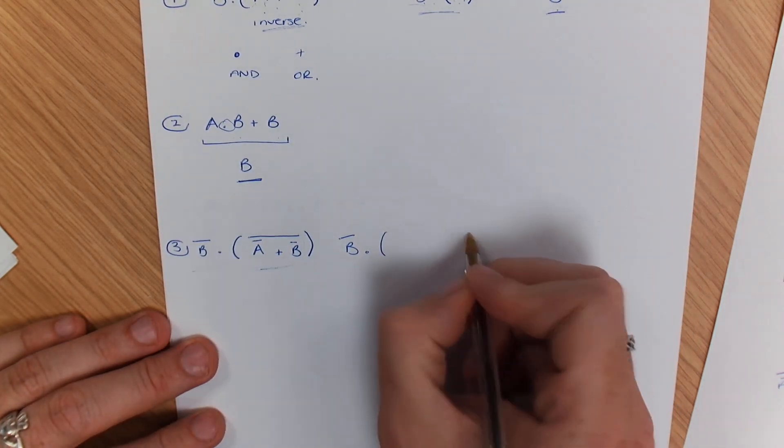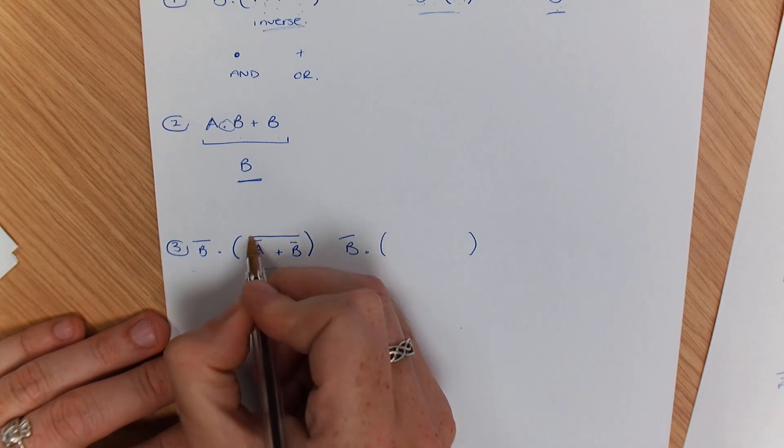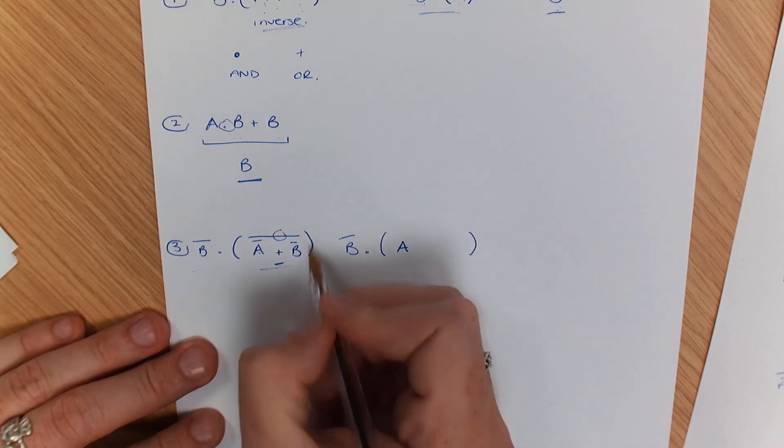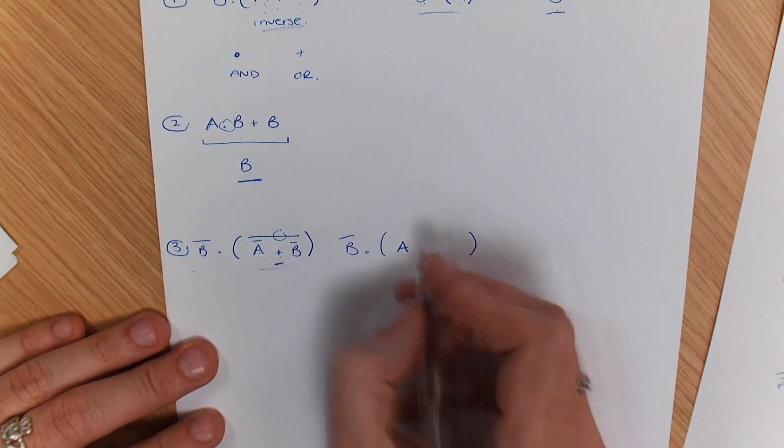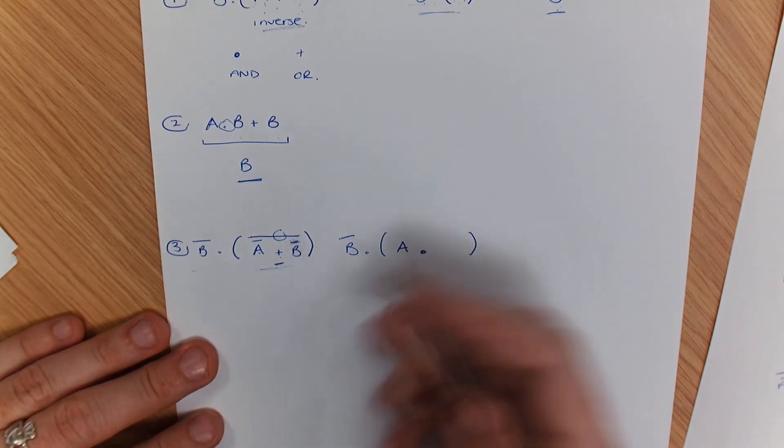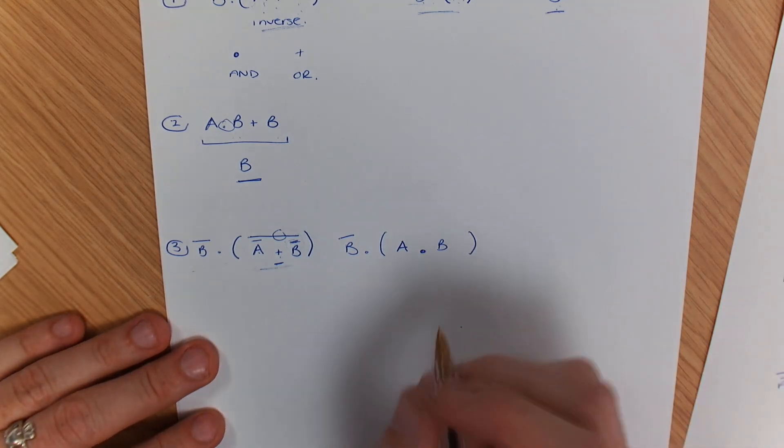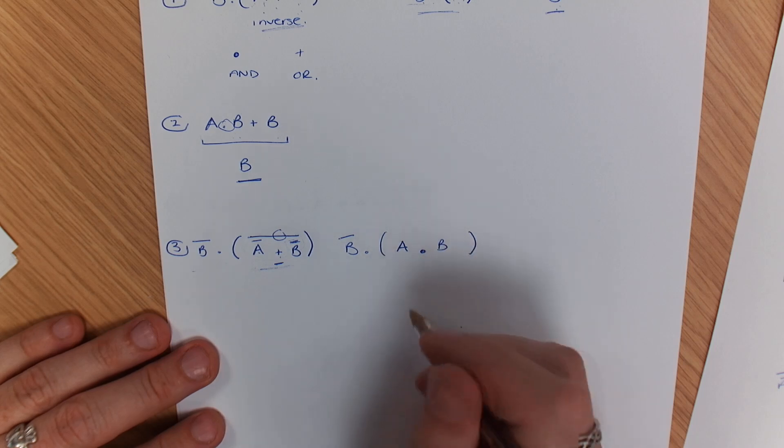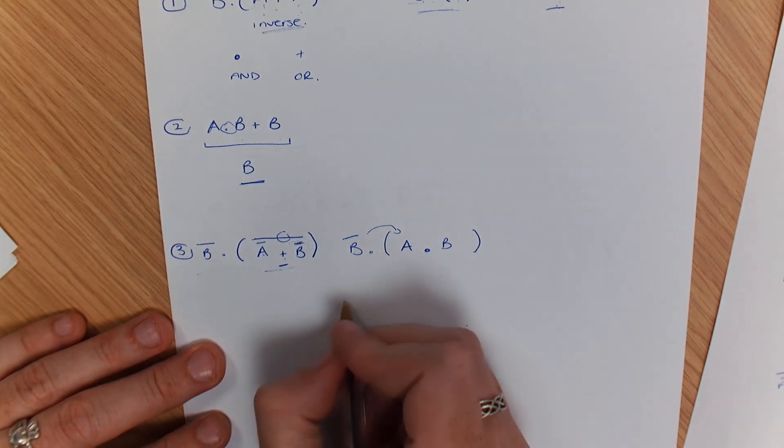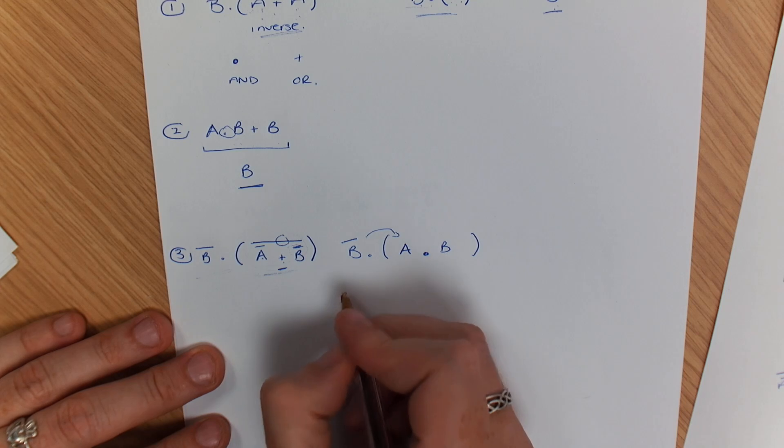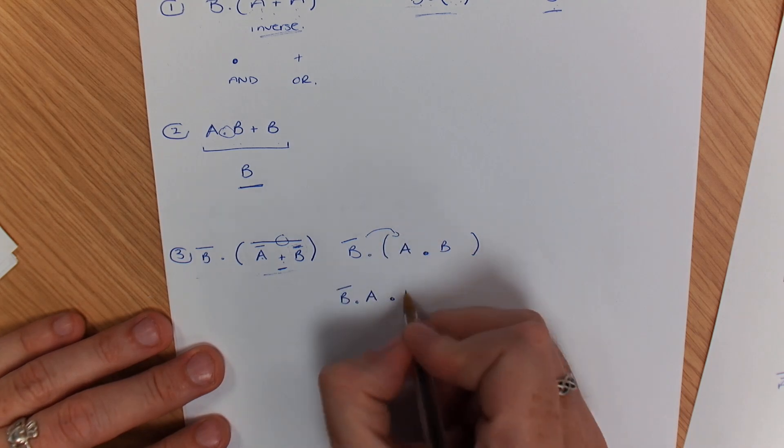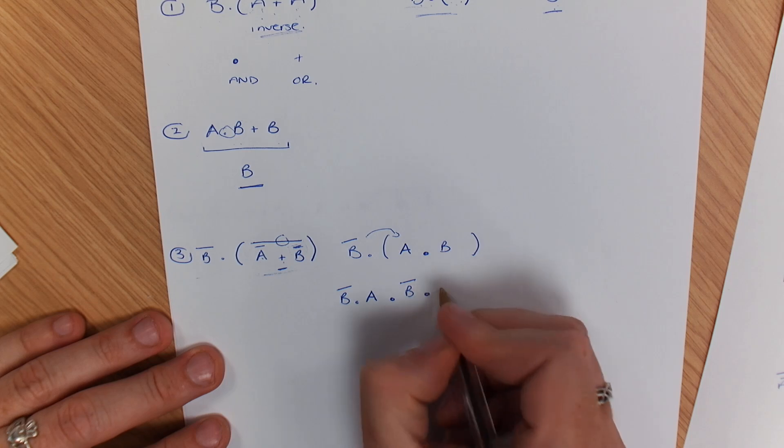When I look at the brackets, because I've got a not A, if I not that again that becomes A. Whenever you see a not over a sign we flip the sign, so we negate the sign. That now becomes dot. And what we've got here is not B but we negate that so it becomes B. Now if you expand these brackets out, what you end up with is not B, A dot not B, and B.